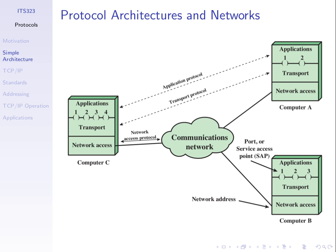In this example diagram we have three computers A, B, and C. The blocks show the protocol architecture inside each computer. In computer B there's a protocol that provides network access, another that provides transport, and another set of protocols for applications - such as a web browser, instant messaging client, Skype, or email. Each of these computers uses the same three-layer protocol architecture: applications, transport, and network access.